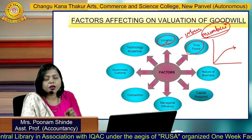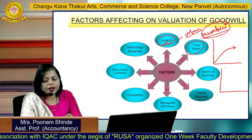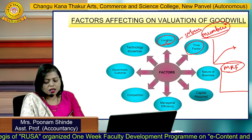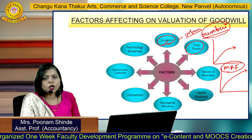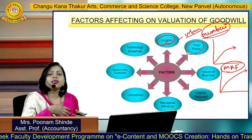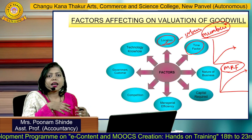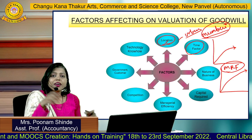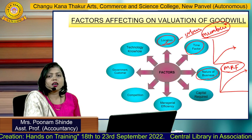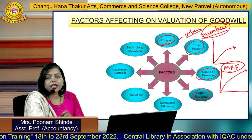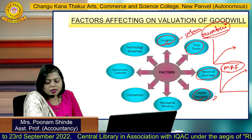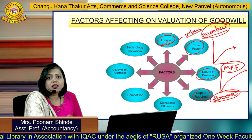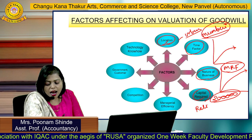Time factor is also very important. Take the example of MRF Tyre — around 50 to 70 years of business has built their goodwill tremendously. If you started business last year, you cannot expect huge goodwill next year; it takes time. Then business nature — which kind of business you are doing also matters a lot. Capital required is another factor — if you start with only two lakh rupees, your capital is very limited, so that affects goodwill.